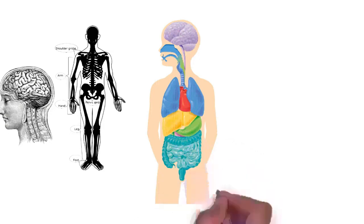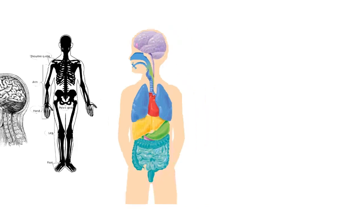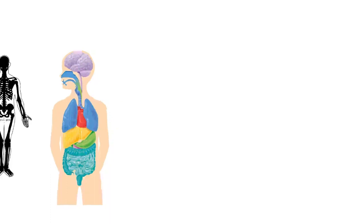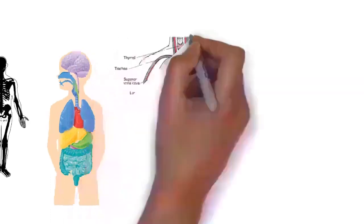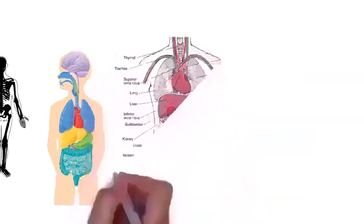Human anatomy is the study of the shape and form of the human body. The human body has four limbs, two arms and two legs, a head and a neck which connect to the torso. The body's shape is determined by a strong skeleton made of bone and cartilage, surrounded by fat, muscle, connective tissue, organs, and other structures. The spine at the back of the skeleton contains the flexible vertebral column which surrounds the spinal cord, which is a collection of nerve fibers connecting the brain to the rest of the body.